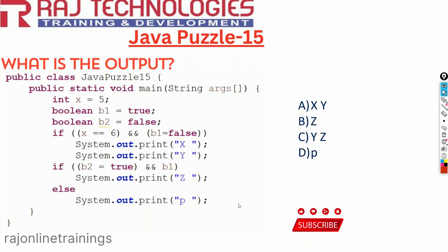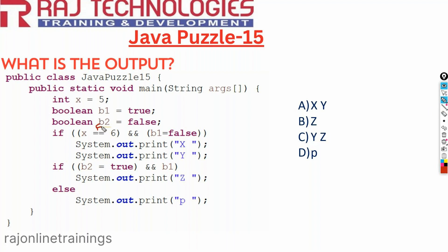Now let us see what the correct output of this code is — understand carefully, it is a somewhat tricky question. The value of x is 5, b1 is true, and b2 is false. Now, the first condition is x equal to 6, which is false. Then b1 equal to false — the initial value of b1 is true, so we might think true equal to false is a false condition.